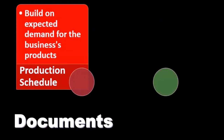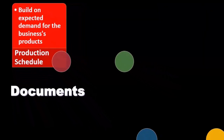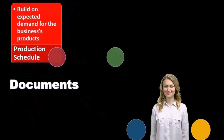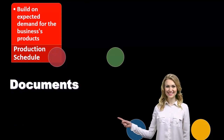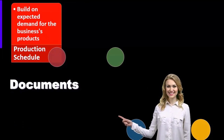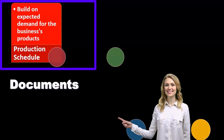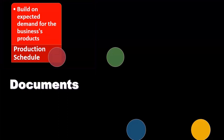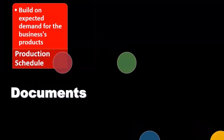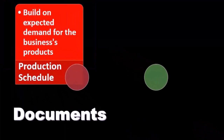Now we'll consider documentation with relation to inventory management, starting with the production schedule. The production schedule would be involved if we're in the production of inventory. If we're in the purchasing and selling of inventory, then we wouldn't have the production-type components, depending on the type of industry that we are in.